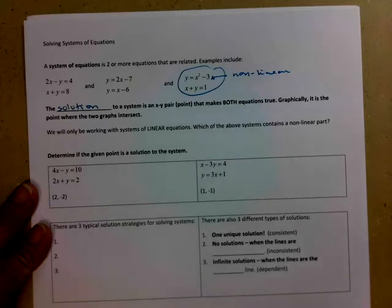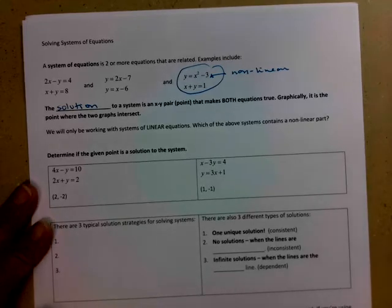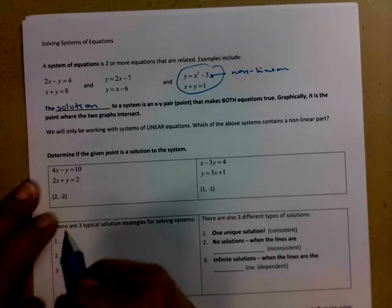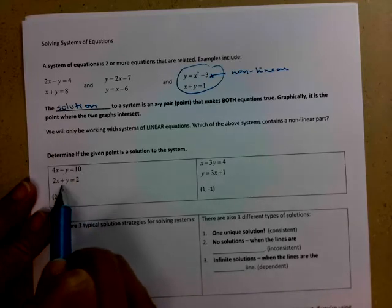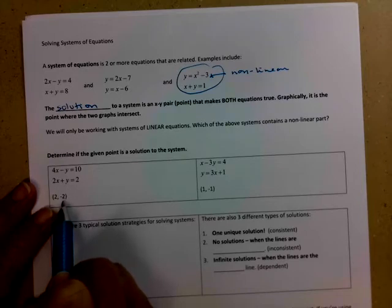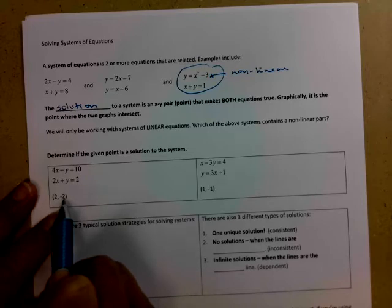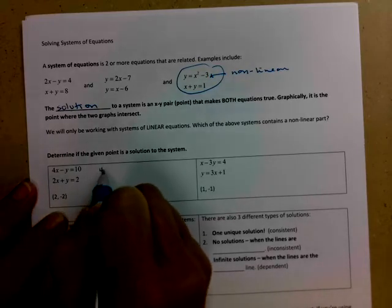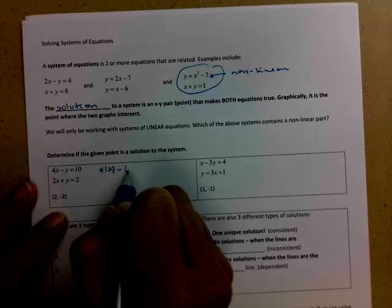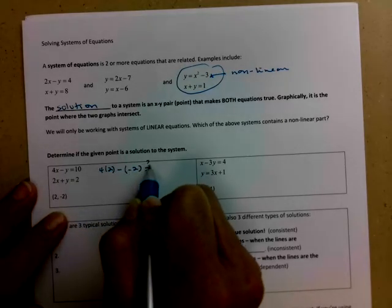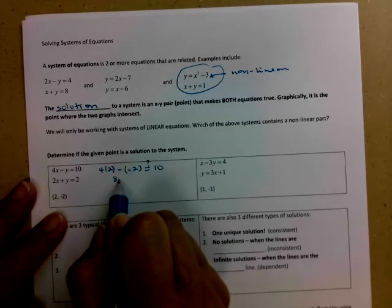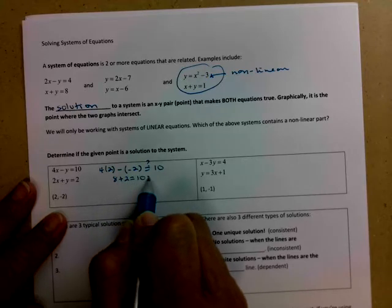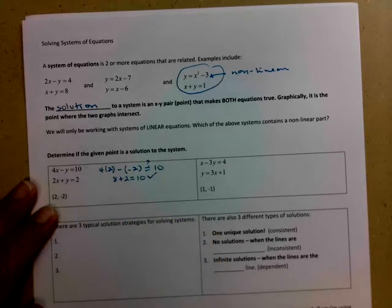Let's see if we can determine if a point is a solution to the system. So it's a solution if it makes both equations true. So my system: 4x minus y equals 10, 2x plus y equals 2, and the point we're going to check is 2, negative 2. So the positive 2 goes in for the x, the negative 2 goes in for the y. So here we go, 4 times 2 minus negative 2, is that equal to 10? So I have 8 minus a negative 2 makes it plus 2, that does equal 10. Good. So it works in the top equation.